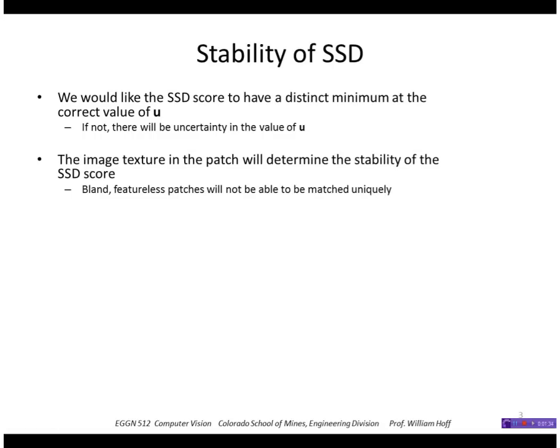The image texture in the patch will determine the stability of that score. If you think about it, a bland featureless patch, homogeneous with no texture, would not be able to be matched very accurately. So we want to choose patches in our image before we even start looking for the corresponding patch in the other image. We want to choose patches that we think will give us a good stable estimate of the displacement.